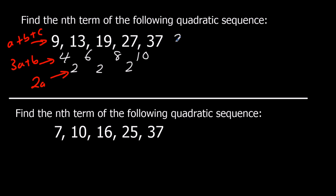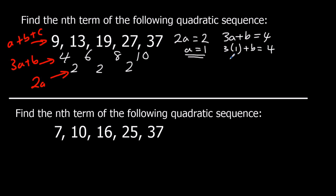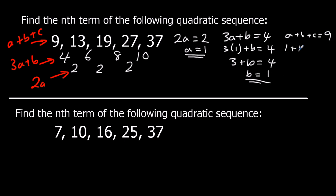First equation: 2a equals 2, so a equals 1. Second equation: 3 times 1 plus b equals 4, so 3 plus b equals 4, giving b equals 1. Third equation: 1 plus 1 plus c equals 9, so 2 plus c equals 9, giving c equals 7. So the nth term is n squared plus n plus 7.